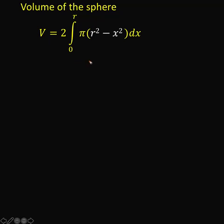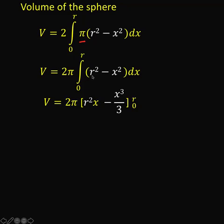So, let's simplify now this integral. Notice that this pi is a constant. So, we can pull that outside the integral. Next, notice that r is a constant. So, the antiderivative of r squared dx is r squared x. Because r is a constant. The antiderivative of a constant is a constant times the variable of integration.